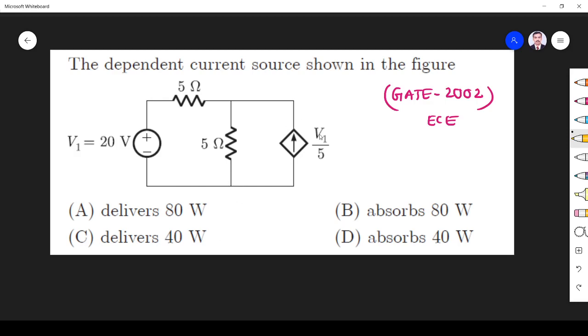So it is a current source. What is V1? V1 is 20 volt. So V1 is 20 by 5, so 4 ampere. It is a current source, that is why I put ampere. So here you see current is coming out. Current coming out means it is delivering.